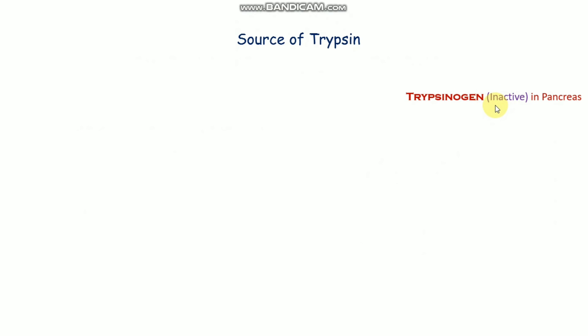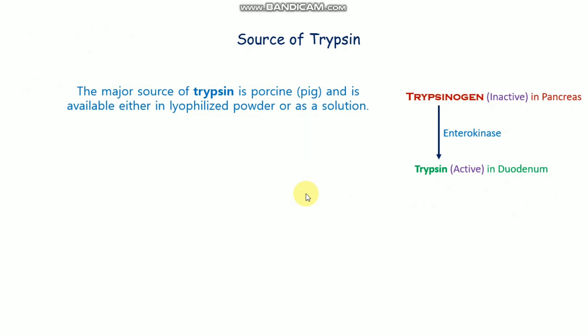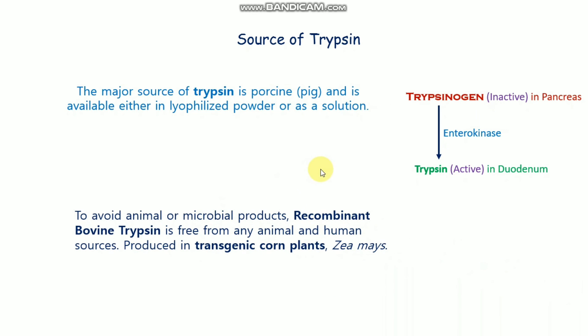Next is the source of trypsin. Trypsinogen, which is the inactive form, is secreted in the pancreas. By the enzyme enterokinase it is converted to trypsin, the active form, in the duodenum — which is part of the small intestine. Trypsin hydrolyzes protein. The major source of trypsin is porcine (pig), available either as a lyophilized powder or as a solution. To avoid animal or microbial products, recombinant bovine trypsin — free from any animal or human sources — is produced in transgenic corn plants.